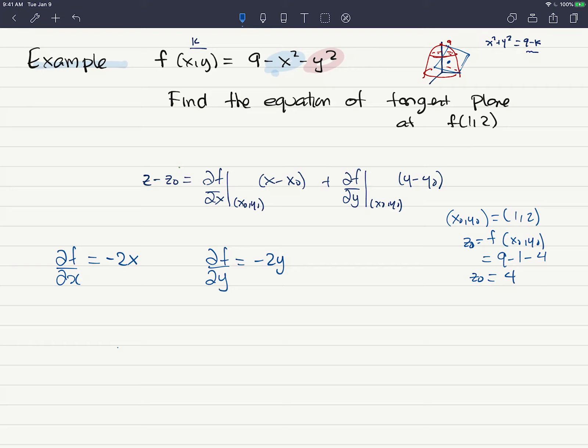Now I'm evaluating these at the points, evaluated at the 1, 2, which is just negative 2. So partial of f with respect to y evaluated at the 1, 2, just negative 4. And my z₀ already found it was positive 4. So there you go.